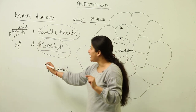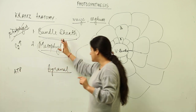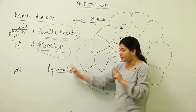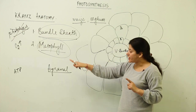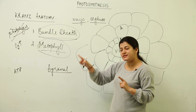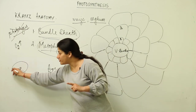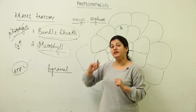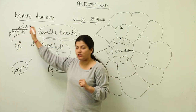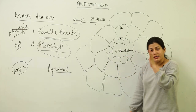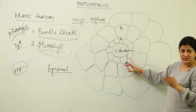So the first key point: the chloroplasts inside the bundle sheath cells, which surround the vascular bundles, are agranal in nature. They have stroma lamellae where cyclic photophosphorylation generates ATP. The photolysis of water is absent, so oxygen generation is also avoided.